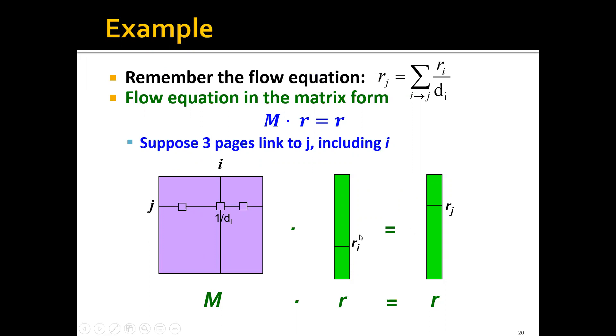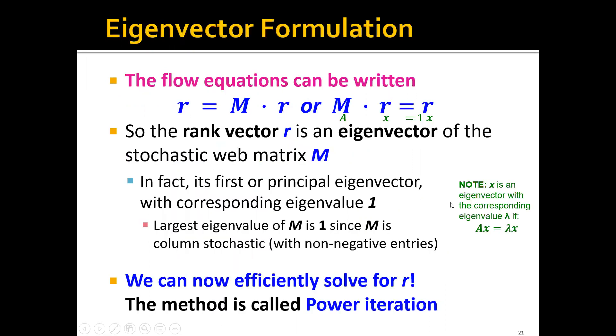Until now, we know that the flow equations can be written as r equals M times r, or M times r equals r.